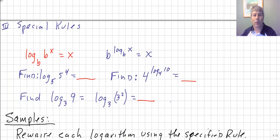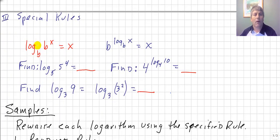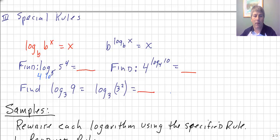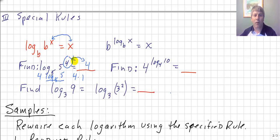There are a couple of special rules. One is: log base b of b raised to the r power equals r — our base raised to some power gives us the exponent as our answer. For example, log base 5 of 5 to the 4th: using our power rule, that's 4 times log base 5 of 5. Log base 5 of 5 is 1, so this becomes 4 times 1, which is 4. So log base b of b to the x just becomes x, and log base 5 of 5 to the 4th is just 4.